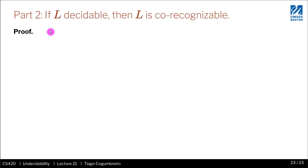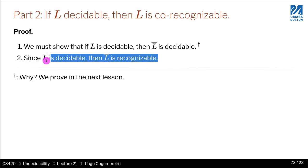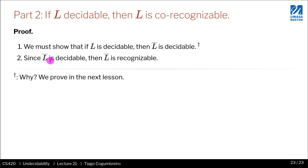The second part of the proof is: if L is decidable, then L is co-recognizable. The way we prove this is as follows. First we show that if L is decidable, then its complement is also decidable. Then we show that if the complement is decidable, then the complement is recognizable — which is easy, since we just proved that if something is decidable then it's also recognizable. So how difficult would it be to prove that if L is decidable then its complement is decidable? That's what we'll see in the next lesson.